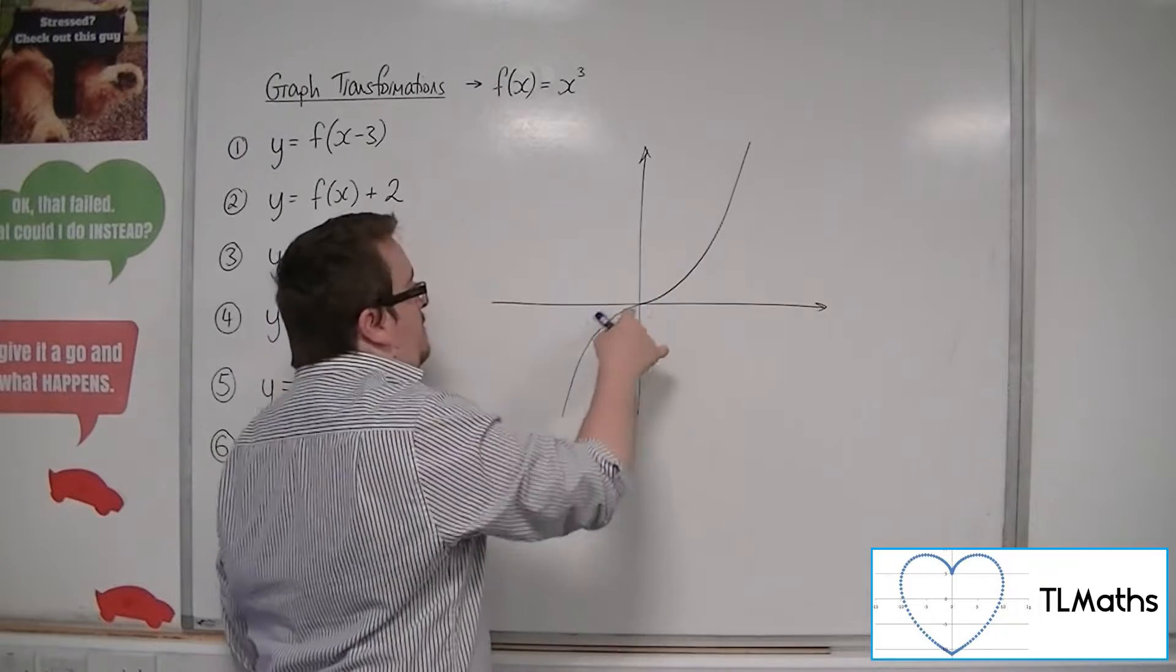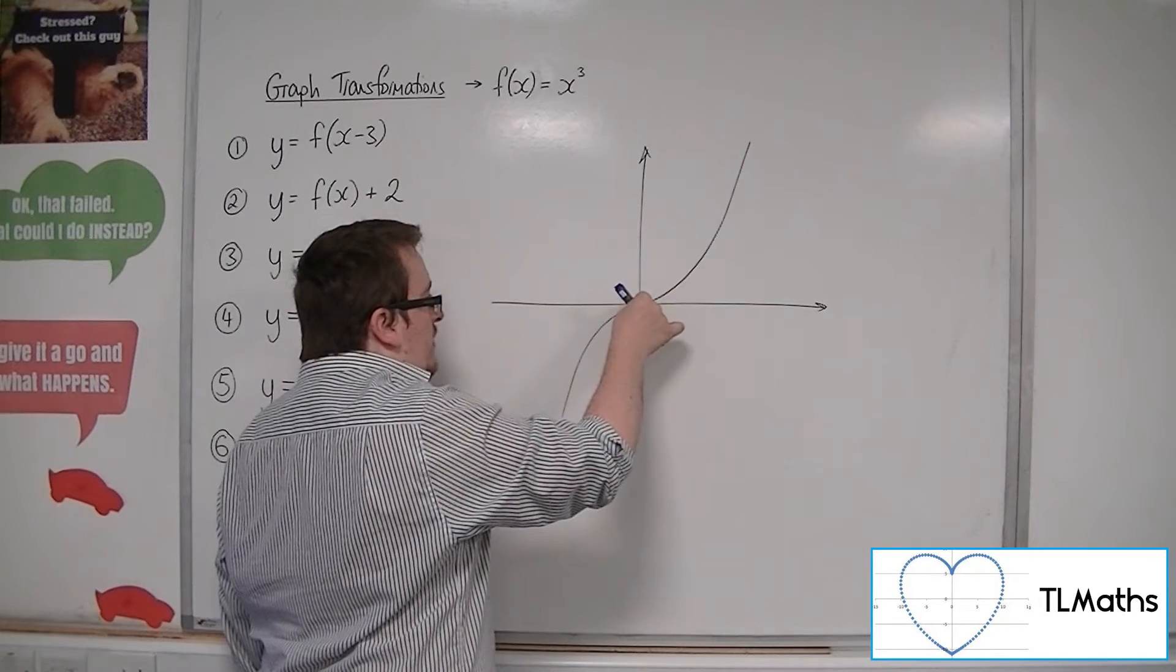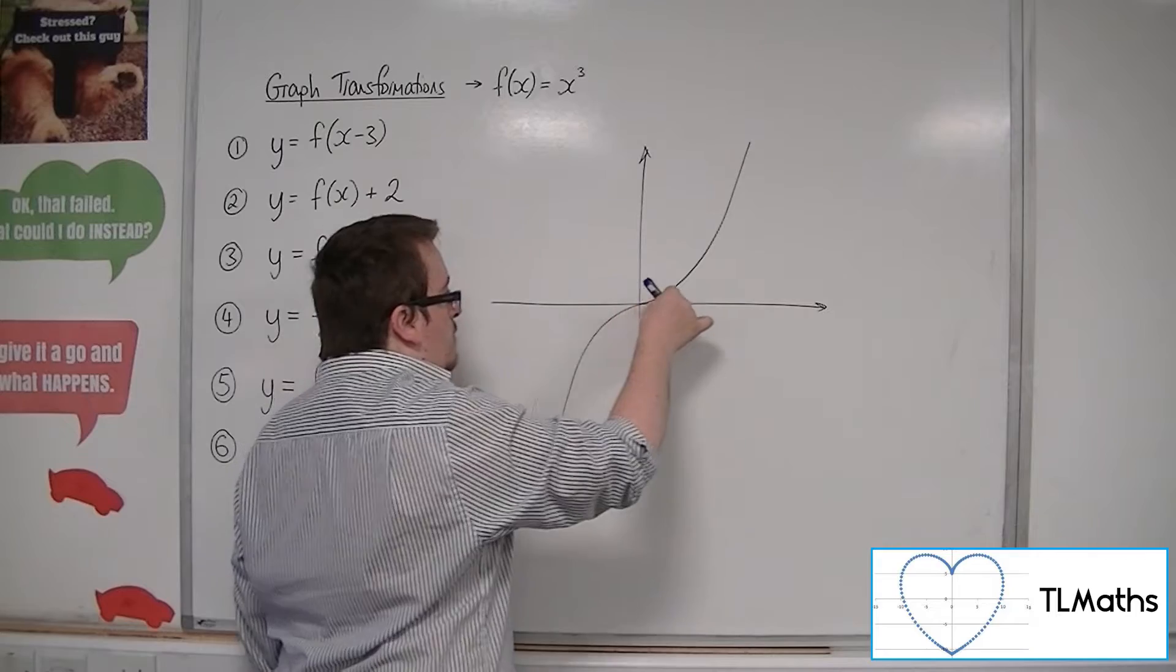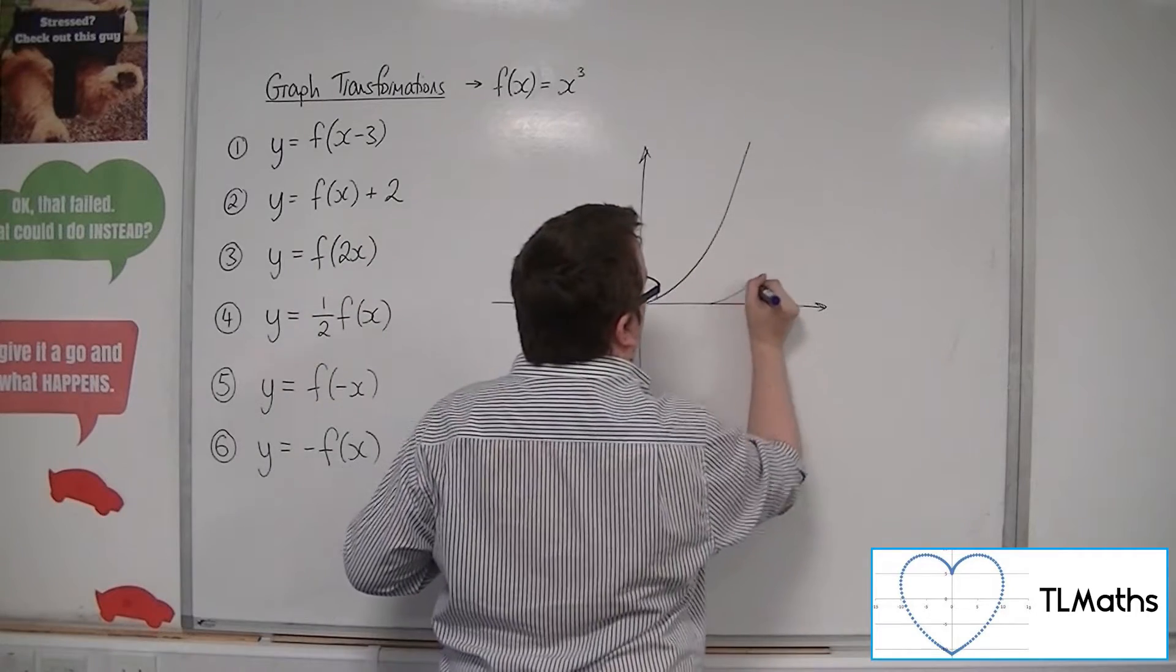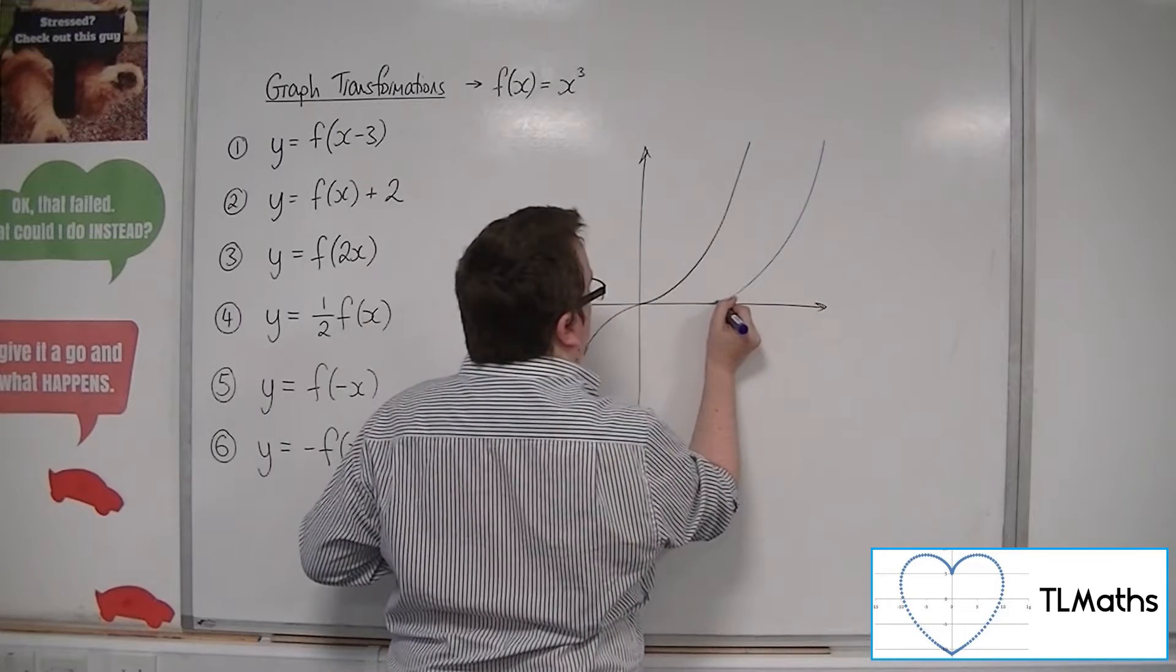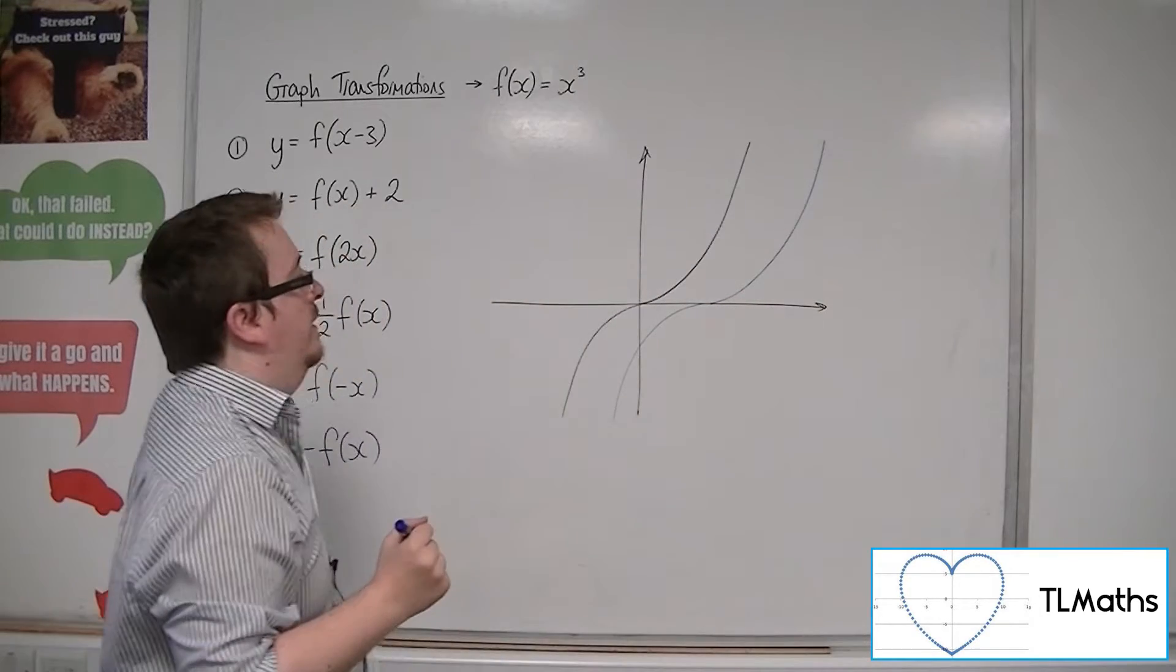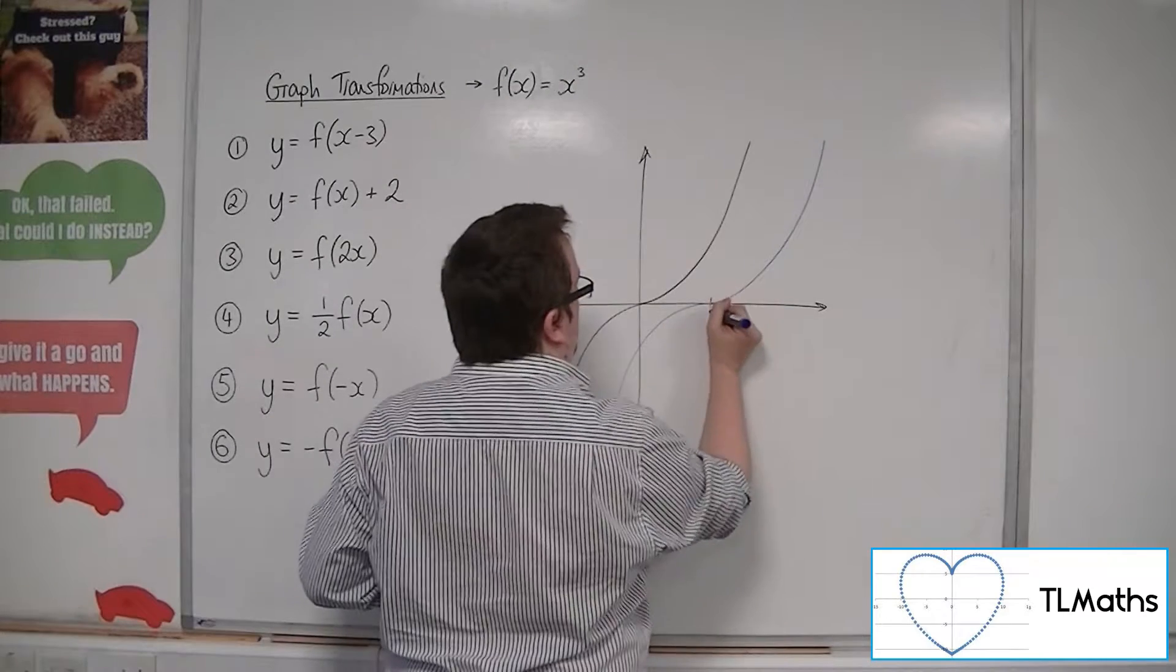if we think of it picking up that point there, the 0, 0, and moving it three steps to the right, then our new curve will look something like this. So there's 3.